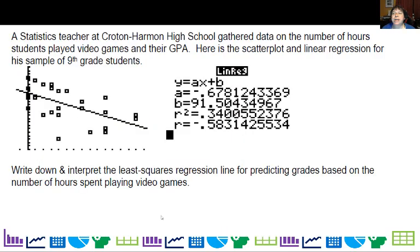So let's go ahead and look at the statistics teacher. He gathered data on the number of hours students played video games and their GPA, and he did a scatter plot and linear regression, and here are the outputs from the calculator. We want to write down and interpret the least squares regression line for predicting grades, based on the number of hours spent playing video games. So I have my A and there's my B. So GPA is equal to 91.5 minus .678 times the hours spent playing video games.